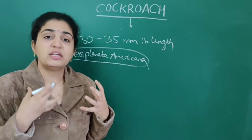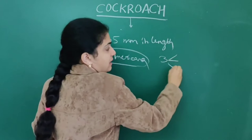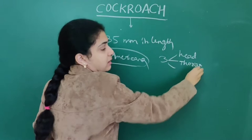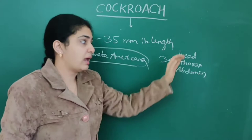The cockroach body is divided into three parts: head, thorax, and abdomen. The first part is head, the middle part is thorax, and the last part is abdomen.